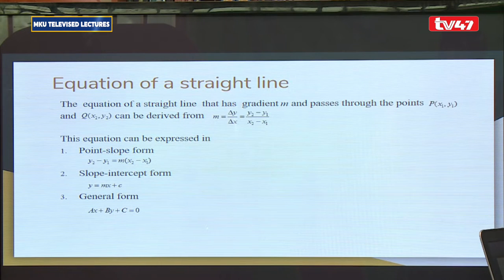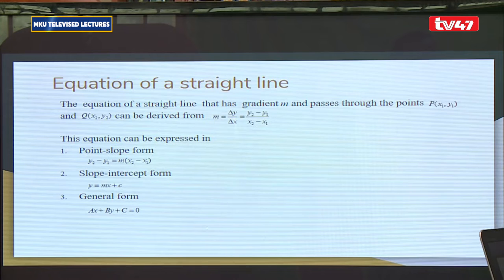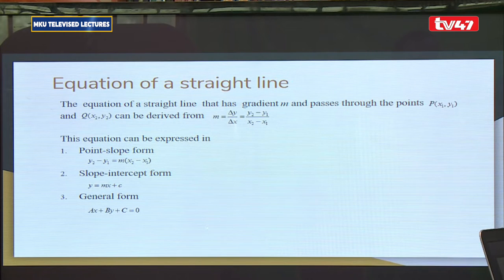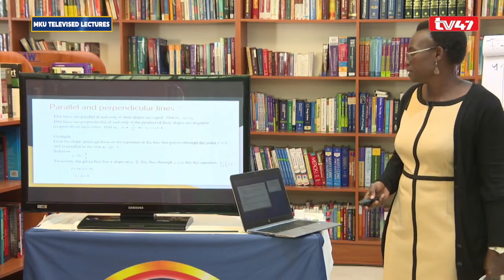The equation of a straight line can be expressed in three ways: point-slope form, which is (y2 minus y1) = m(x minus x1), given two points with coordinates (x1, y1) and (x2, y2); slope-intercept form, y = mx + c; and general form, ax + dy + c = 0.